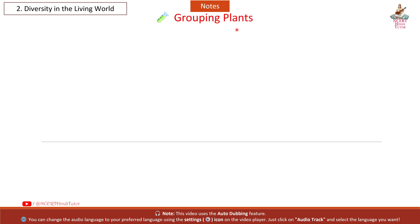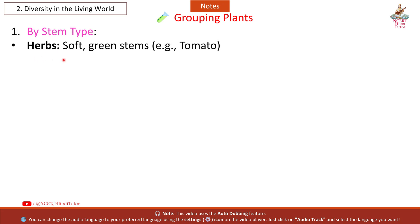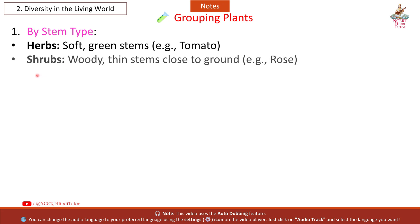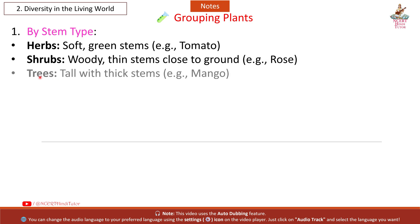Grouping Plants by stem type: Herbs have soft green stems — example: tomato. Shrubs have woody thin stems close to the ground — example: rose. Trees are tall with thick stems — example: mango.